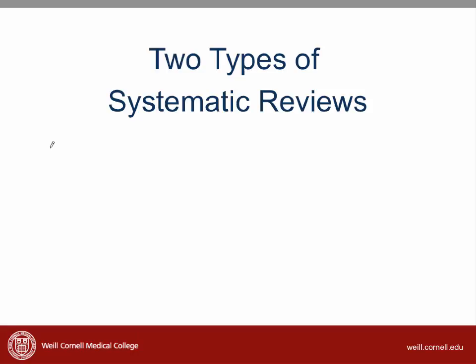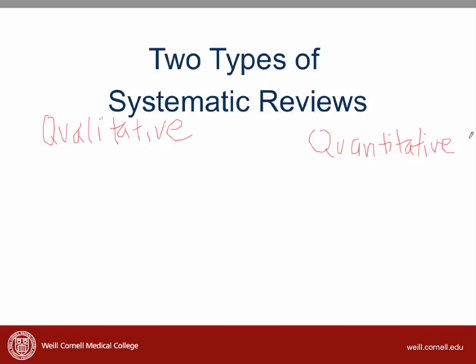Systematic reviews come in two forms. Some systematic reviews are qualitative and others are quantitative, but they all differ from narrative reviews because the authors systematically search the available literature regardless of whether they do a qualitative assessment or a quantitative assessment. The quantitative assessments are sometimes called meta-analyses. Regardless of how the authors decide to synthesize the results, most systematic reviews report information on each individual study as either a table in the body of the article or as an appendix.